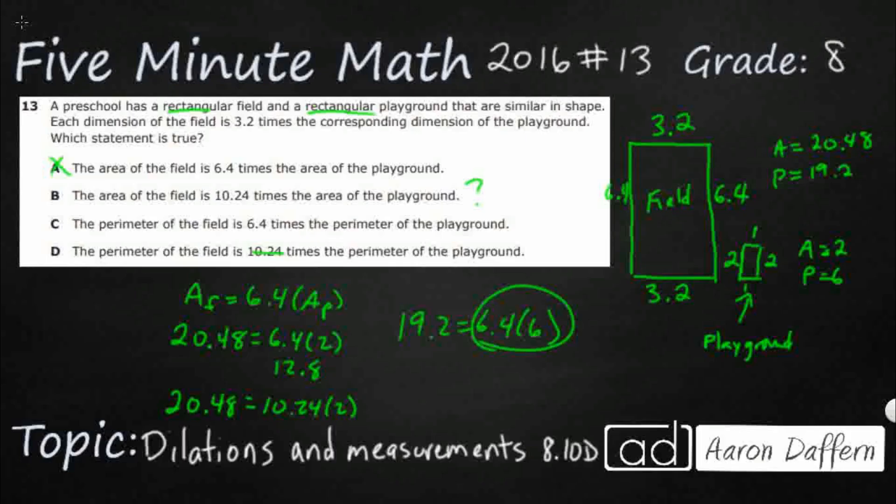Our answer here is going to be B because when we're dealing with scale factors and dilations, the area is going to be the lengths increase squared. So 3.2 squared is going to be your 10.24.